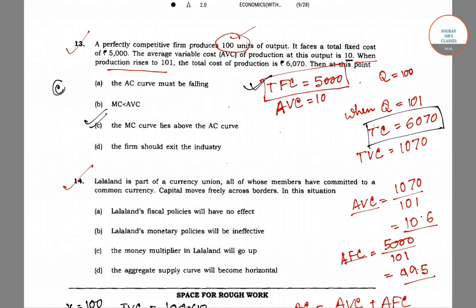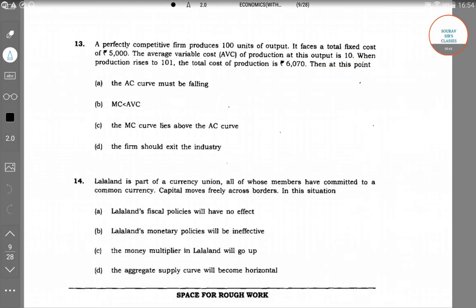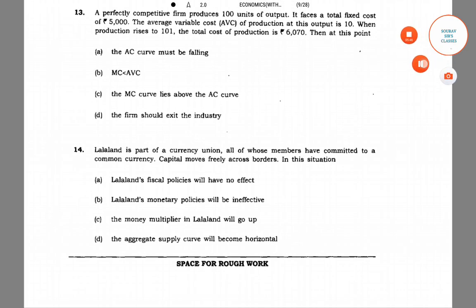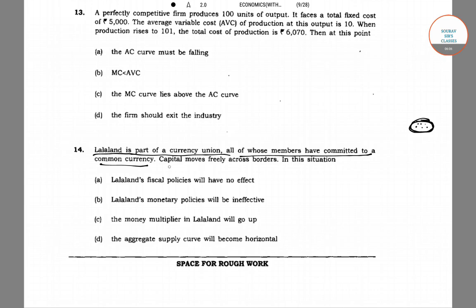Now coming to question number 14. Question 14 says that Lala Land is part of a currency union, all of whose members have committed to a common currency. Capital moves freely across borders — there are no restrictions on the movement of capital from one country to another. So capital can move freely between member countries.